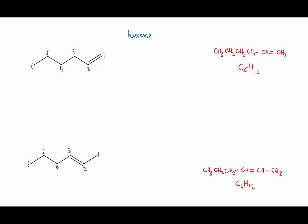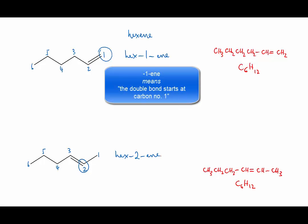We then indicate this in the name by inserting a number into the name like this, hex-1-ene and hex-2-ene. The number shows that the thing that comes after it, that is the double bond indicated by the ene, starts at that numbered carbon.